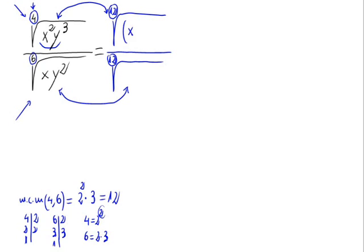So let's raise x squared times y cubed to 3. And now 12 divided by 6 is 2, so x times y squared is raised to 2.